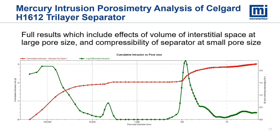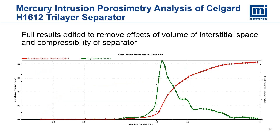Here we see the full results for the other tri-layer separator, again with both interstitial filling and compression effects seen. And now we see the edited results where those effects have been removed. As with the other two samples, the distribution is skewed to the small-diameter side of the primary mode and some shoulders are present.